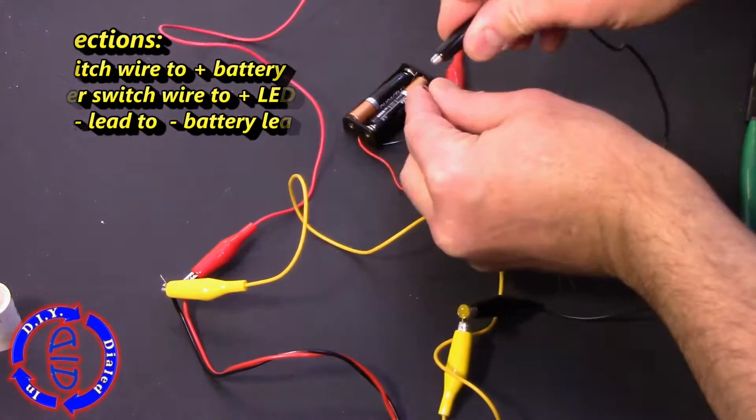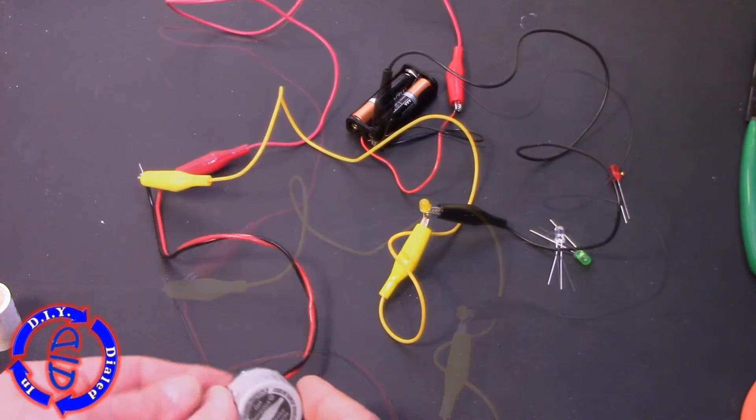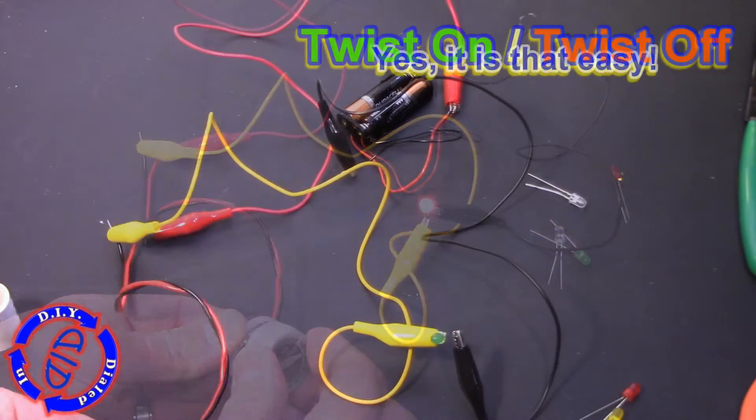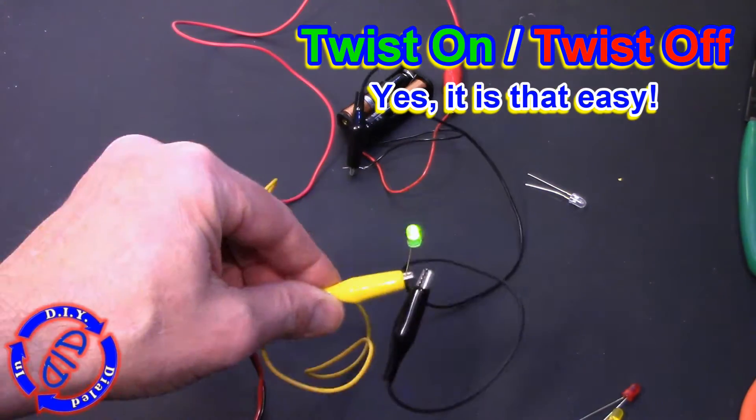Then we'll just take the negative lead coming off the battery and connect it directly to the negative lead on the LED. That way when we twist our bottle cap it turns on.